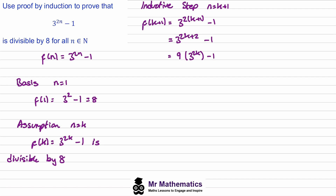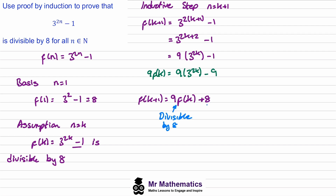Since f of k has one lot of three to the two k, we need nine f of k. Expanding nine f of k gives nine lots of three to the two k, minus nine. So now we have three to the two k in terms of f of k and can substitute back. So f of k plus one equals nine f of k. But now we have negative nine and we need negative one, so we need to add eight. We know f of k is divisible by eight, so nine f of k is also divisible by eight. And eight is clearly divisible by itself. Since each of these terms are divisible by eight, we've proven that f of k plus one is also divisible by eight.